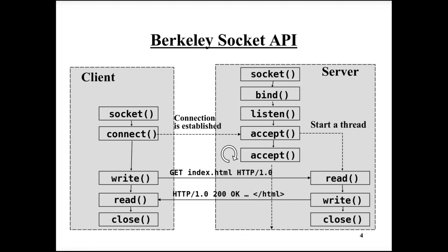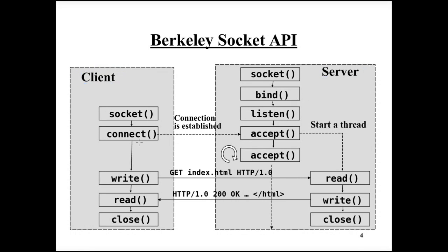Sockets as a concept originate from the Berkeley Socket API, published in the beginning of the 80s. These are the primitives defined in the Berkeley Socket API, which defines what can be done with sockets. There is the client that will request a connection to be established, and there is the server that will receive the connection request and accept establishing a connection. The socket function exists on both client and server side and creates the socket. Bind, used on the server side, associates the socket with a particular IP address and port number so it can be identified by the client. When listen is called, the socket enters the listening state, which means it starts accepting connection requests.